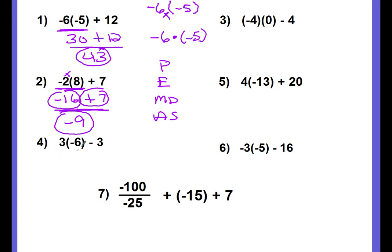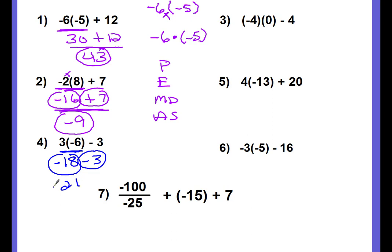Number 4 — try this one on your own, then come back and work it with me. First thing we want to do is the multiplication: 3 times negative 6. 3 times 6 is 18, and a positive times a negative is a negative. Bring down the minus 3. Now you're ready to combine — circle your integers and their signs. If the signs are different, add them up. I get 21, and you keep the sign: negative. So the answer is negative 21.